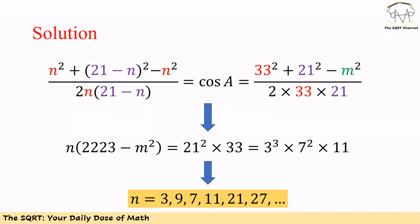If we write 21 and 33 based on the product of their prime numbers, we will see 21² times 33 is equal to 3³ times 7² times 11. So we have N times (2223 - M²) is equal to 3³ times 7² times 11.